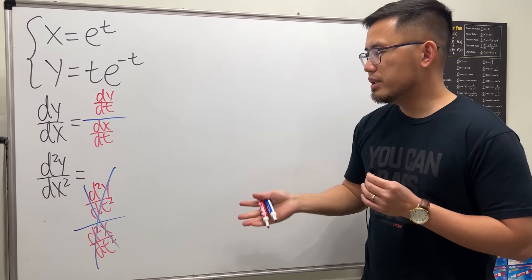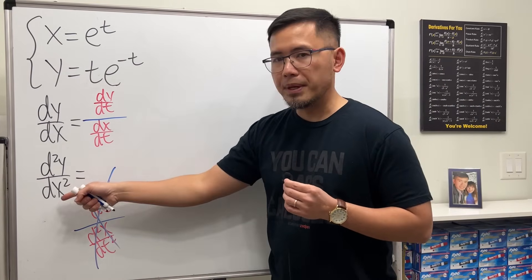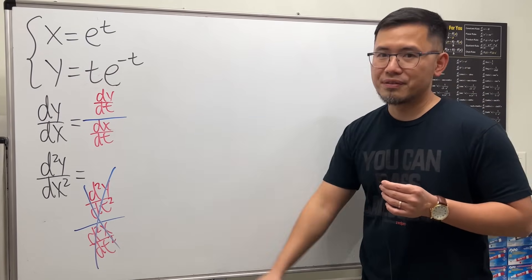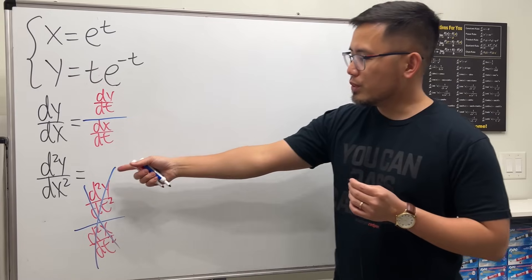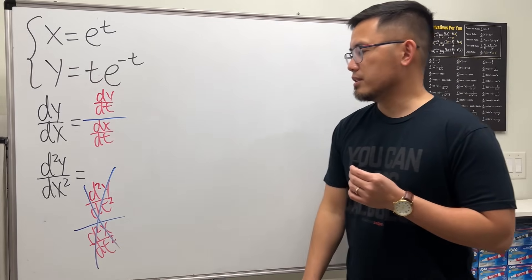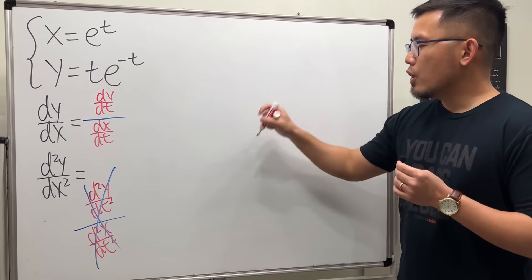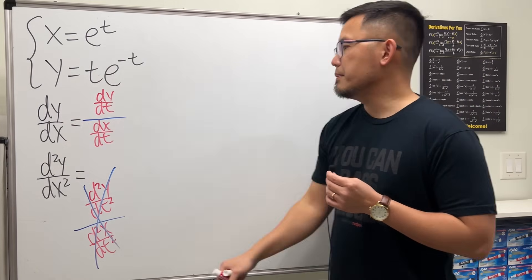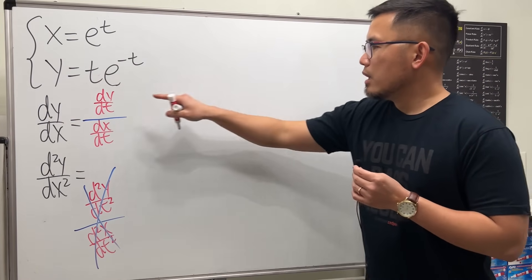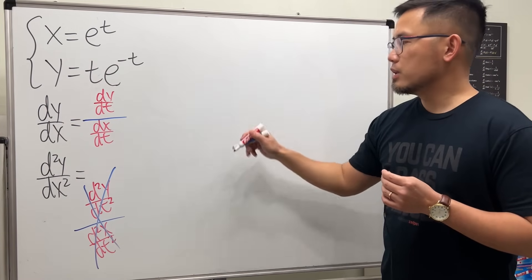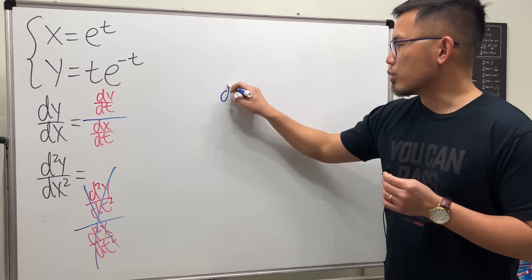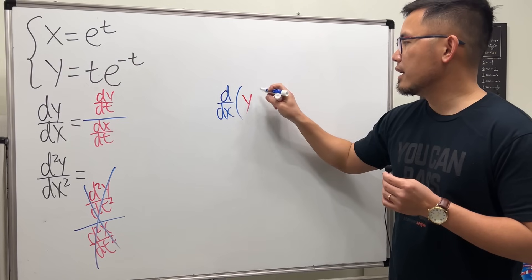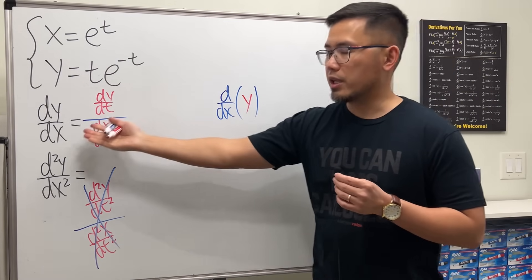Be really careful. This notation, in my opinion, is the most well-designed notation in math. So how do we get this correctly? Here is the deal — let's review this one more time. dy/dx means we take the derivative with respect to x of y. That's how we get that.